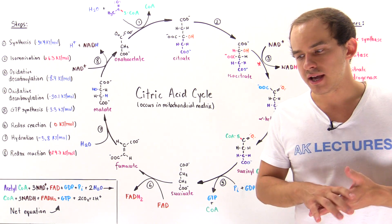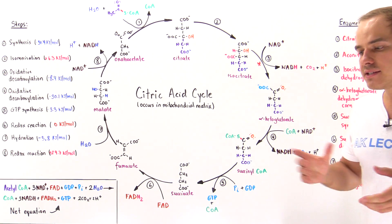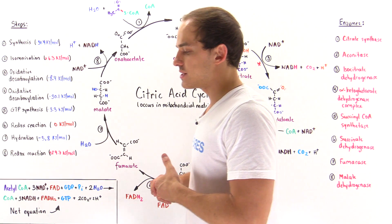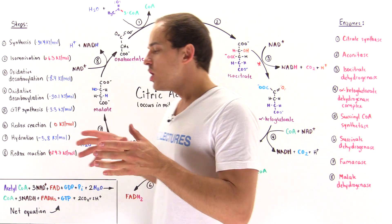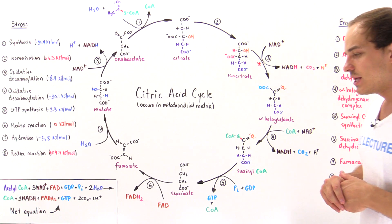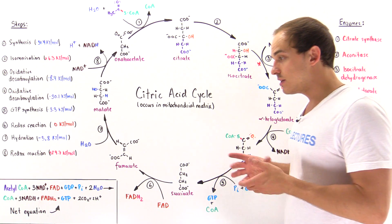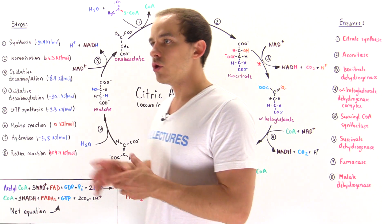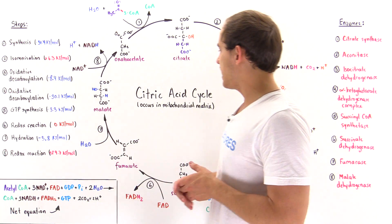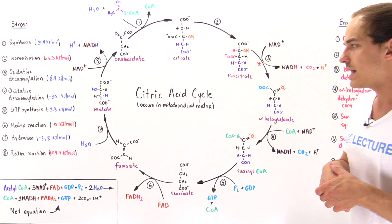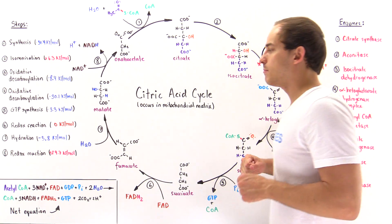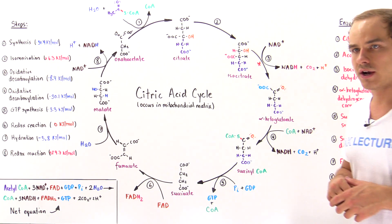Now that we discussed the details of the eight steps of the citric acid cycle, let's summarize our results. We have the citric acid cycle, also known as the tricarboxylic acid cycle, or TCA cycle, and also known as the Krebs cycle. So we have three different names for this single process that takes place entirely in the matrix of the mitochondria of our cell.